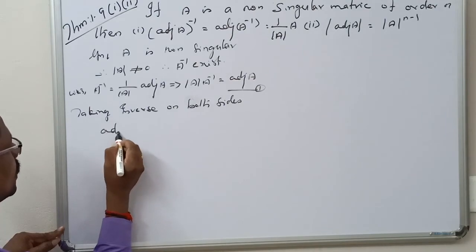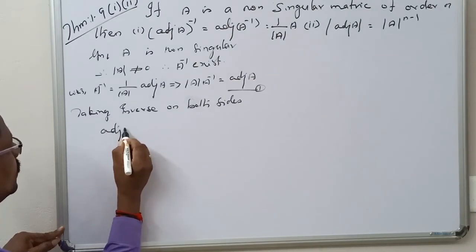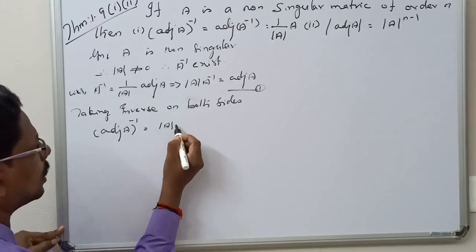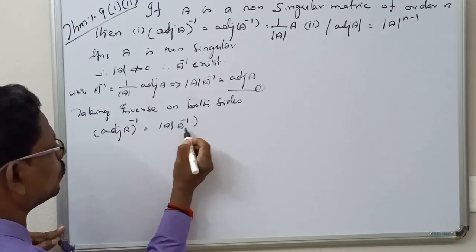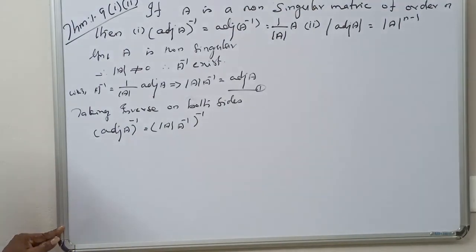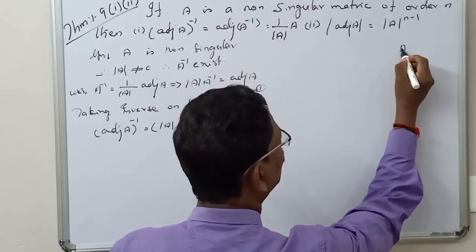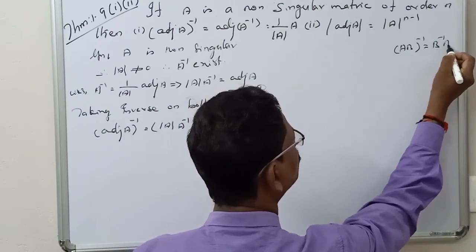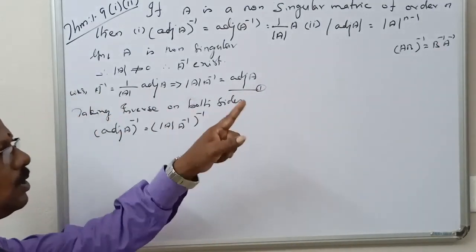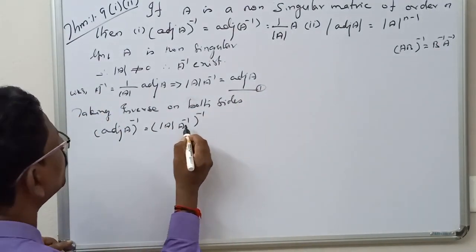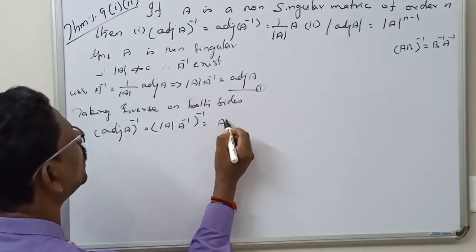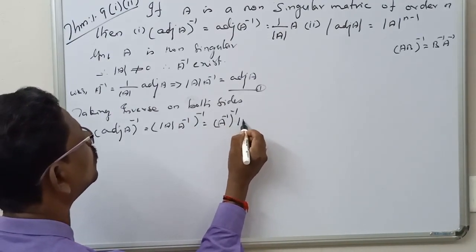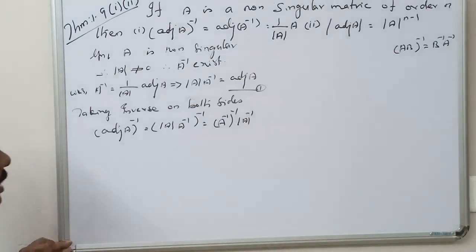Taking inverse on both sides: the left-hand side is adjoint of A, the whole inverse, equal to the inverse of determinant of A into A inverse. That formula we know, so it equals A inverse the whole inverse, into determinant of A inverse.